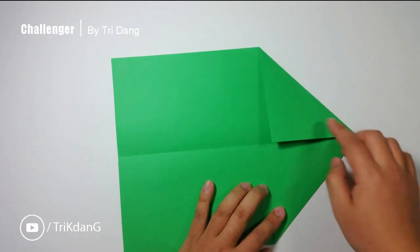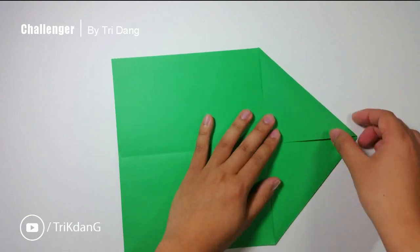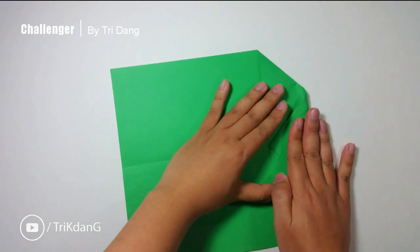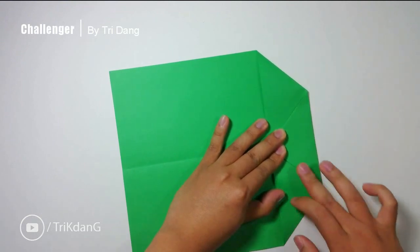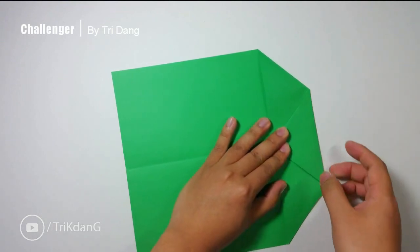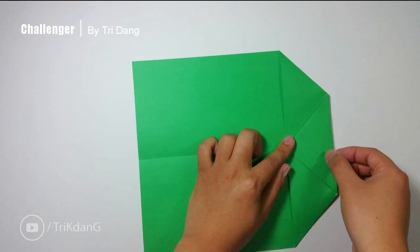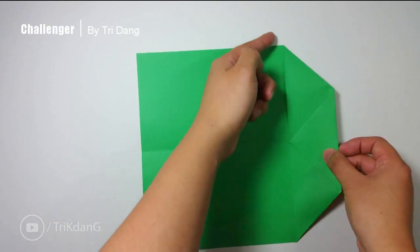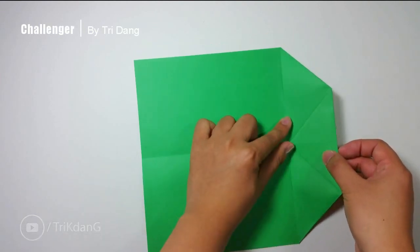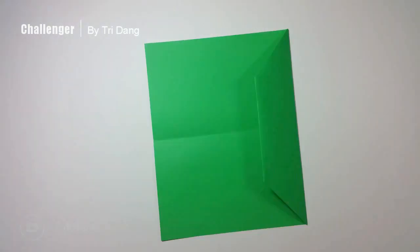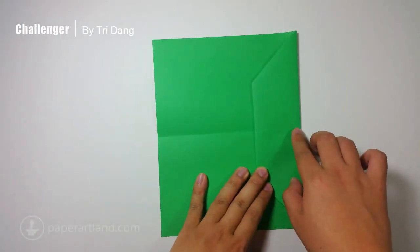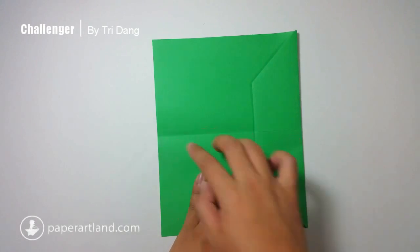Now, start from the tip here, fold it to this line. And next, I will fold the whole shape here down using this line as a reference. Make sure that this crease is lined up with this crease.